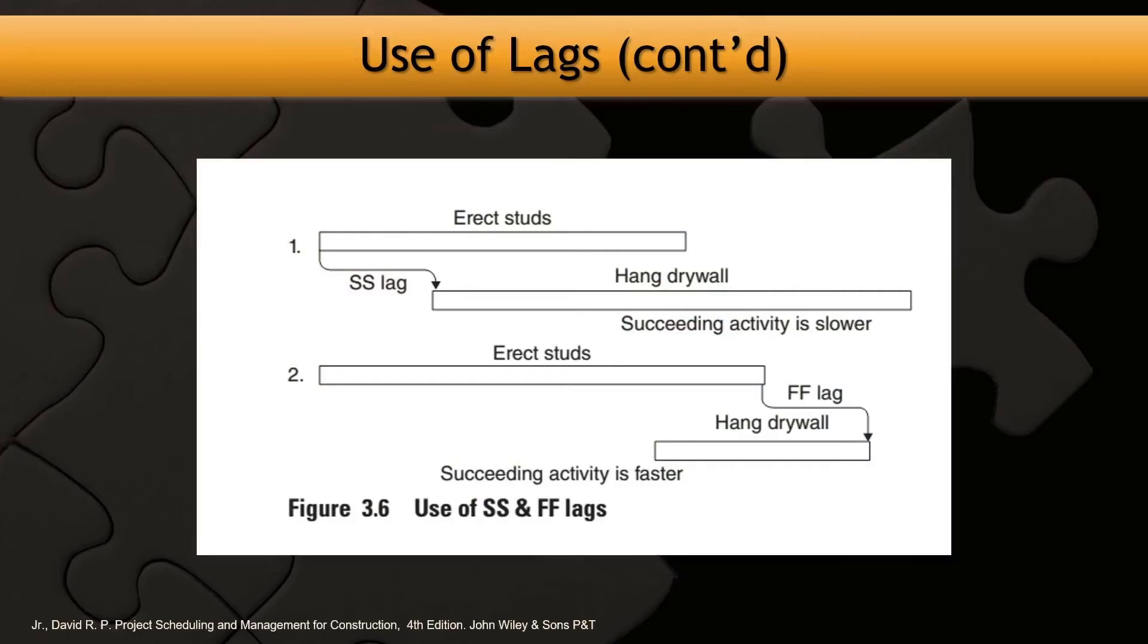Usually the thinking process for that is: if the succeeding activity is slower, usually start-to-start is a good way to overlap activities. But if the second activity is faster - the second succeeding activity is faster - it's better to use finish-to-finish.